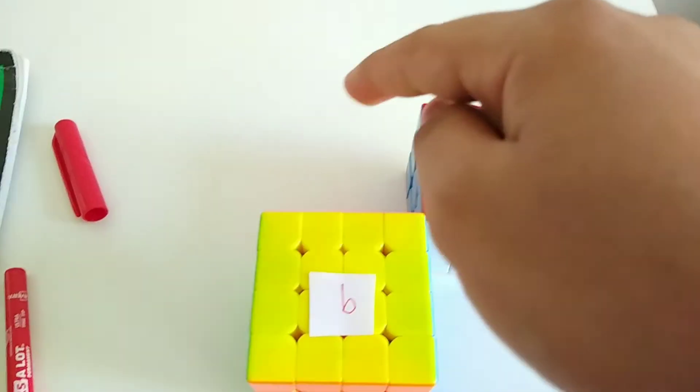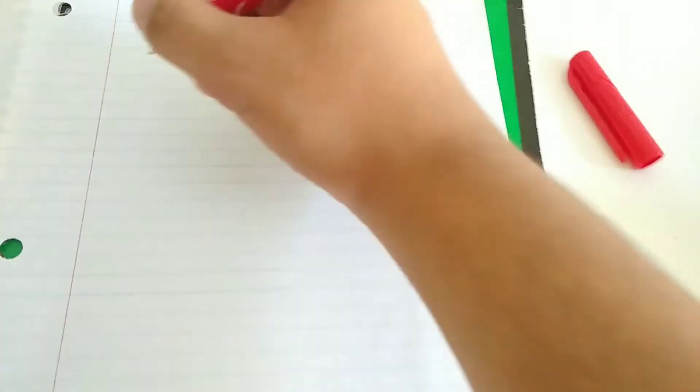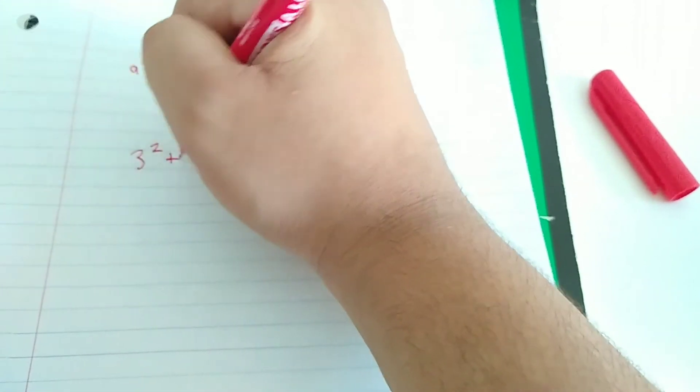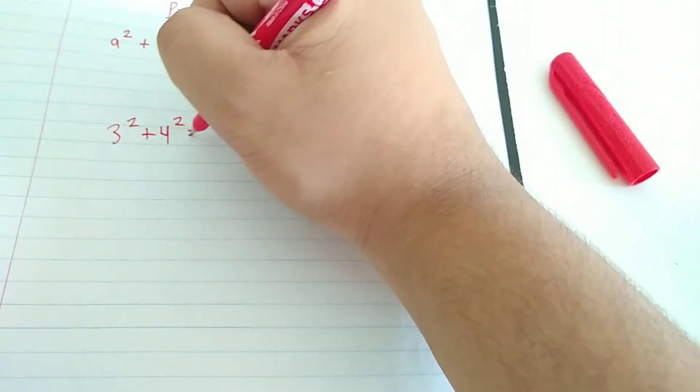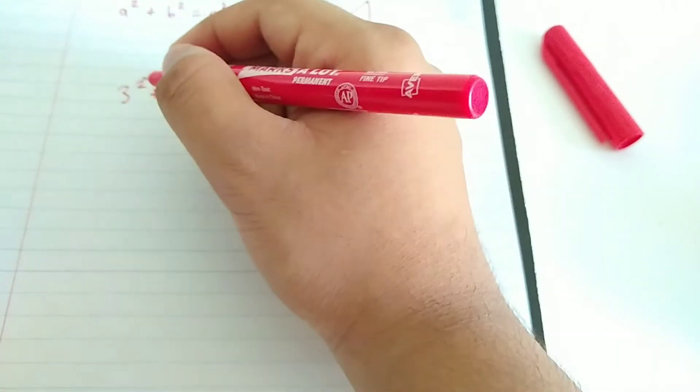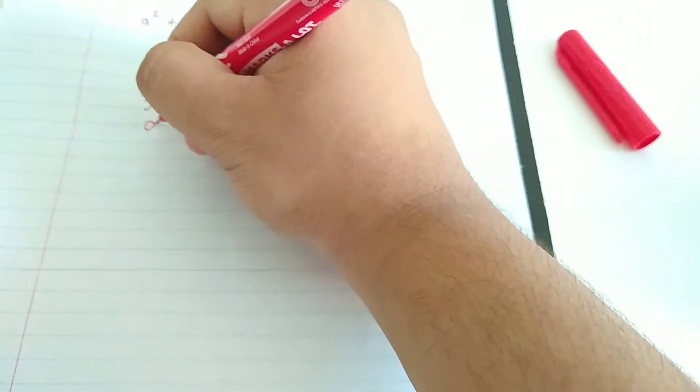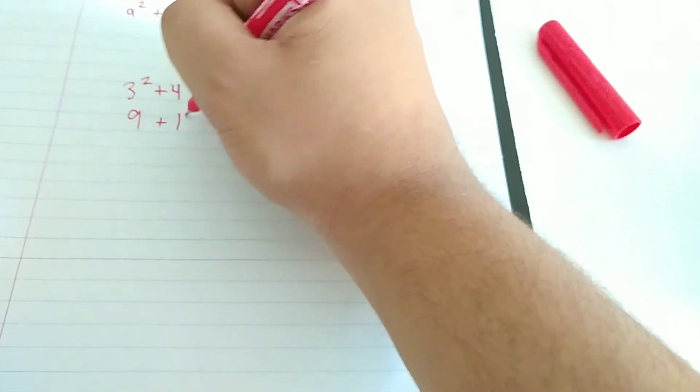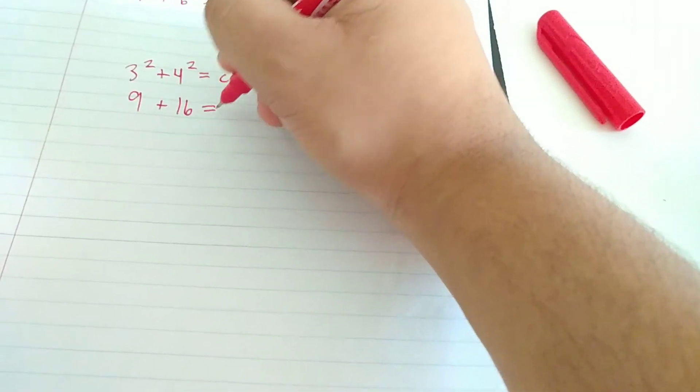So 3 squared plus 4 squared equals c squared. 3 times 3, or 3 to the power of 2, is 9. 4 to the power of 2 is 16. Equals c squared.